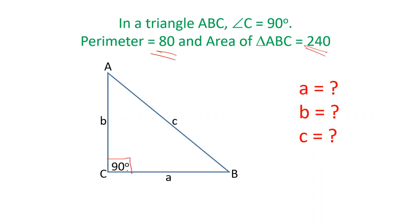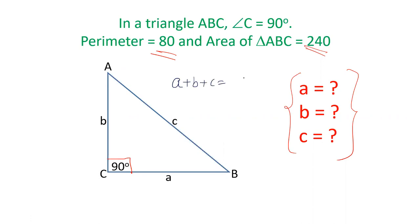The angle is 90 degrees at C, and we have to find out the three sides when the perimeter is 80 and area is 240. We will apply three different formulas. First, the perimeter: a plus b plus c equals 80. Second, the area of the triangle is 240, that is half times a times b equals 240, so the value of ab is 480.